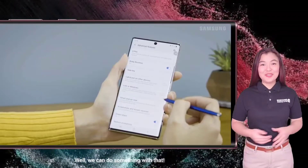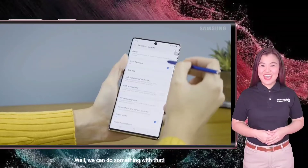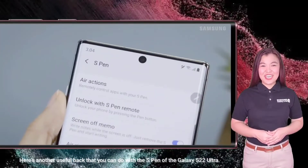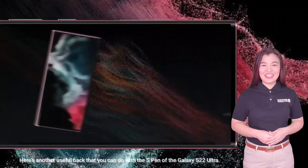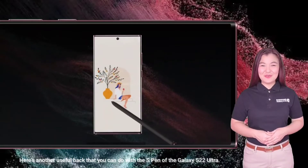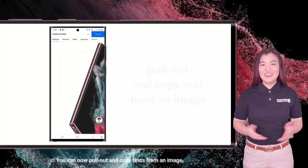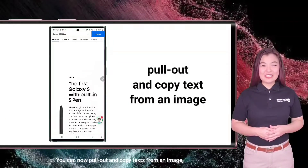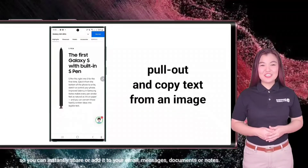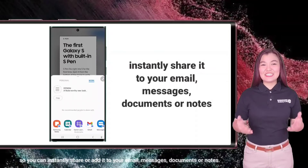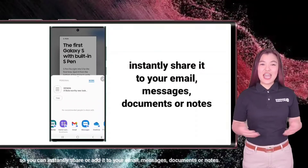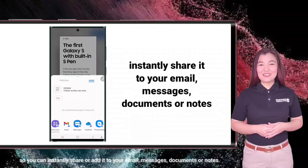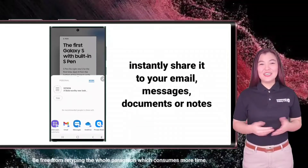Well, we can do something with that. Here's another useful hack that you can do with the S Pen of the Galaxy S22 Ultra. You can now pull out and copy text from an image, so you can instantly share or add it to your email, messages, documents, or notes.